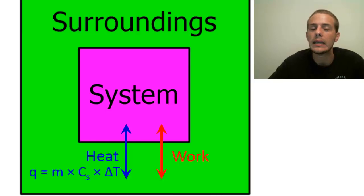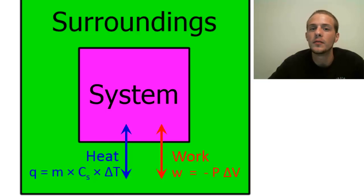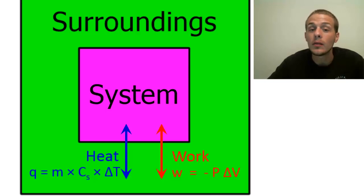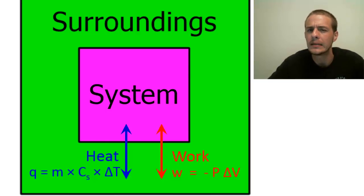If you wanted to calculate the heat absorbed or released by a system, it's simply going to be the product of the mass of the system, the specific heat capacity of the system, and the change in temperature. And if we wanted to calculate work, it's simply going to be minus P delta V, where P is pressure and delta V is the change in volume. We could calculate delta E by individually calculating the heat and the work and adding those together, but look at all the information we need: mass, specific heat, change in temperature, pressure, and change in volume. That's a lot of stuff to measure just to get delta E.